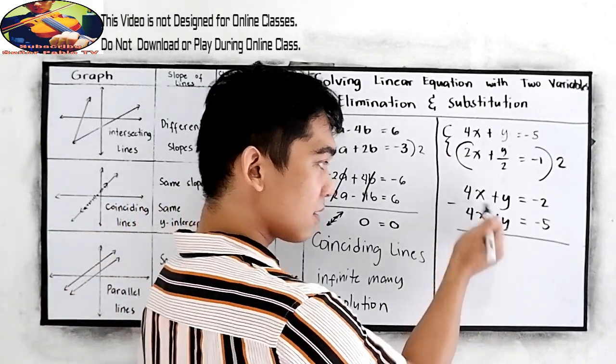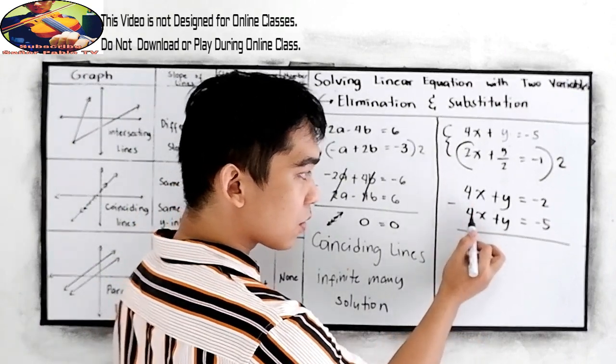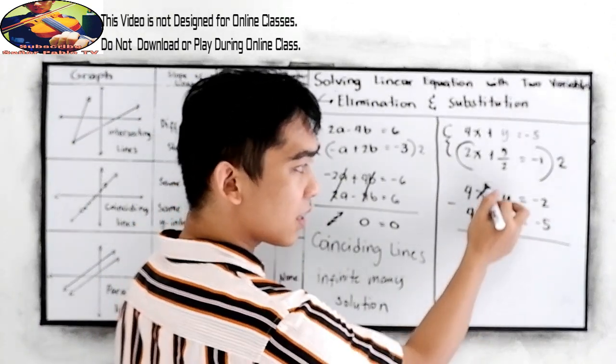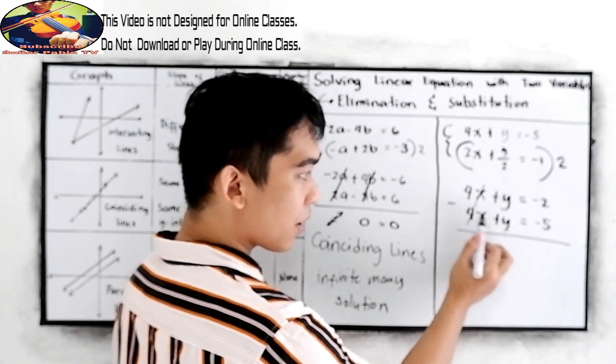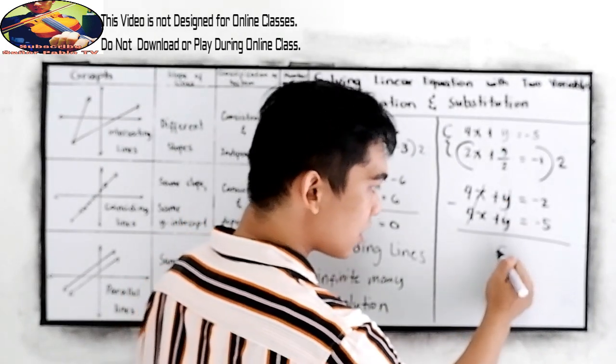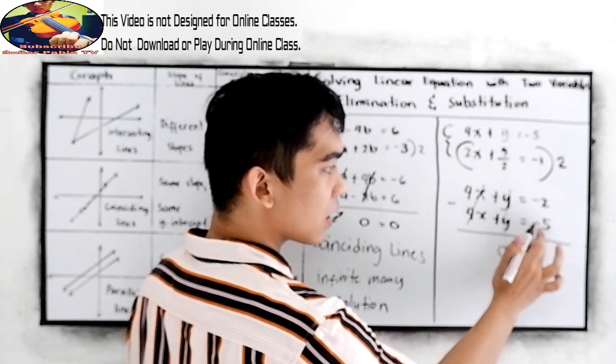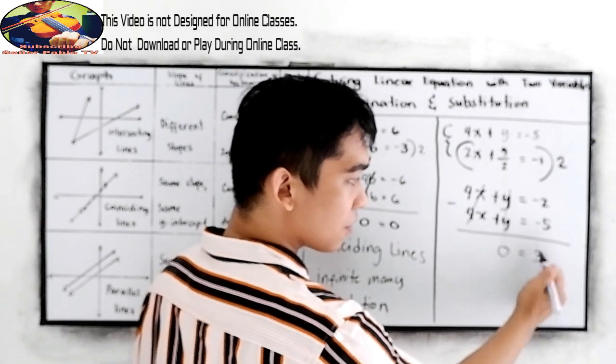And let us subtract. 4x minus 4x that is 0. y minus y that is also 0. So this will give us 0 is equal to negative 2 minus negative 5 positive 3. So 0 is equal to a number.